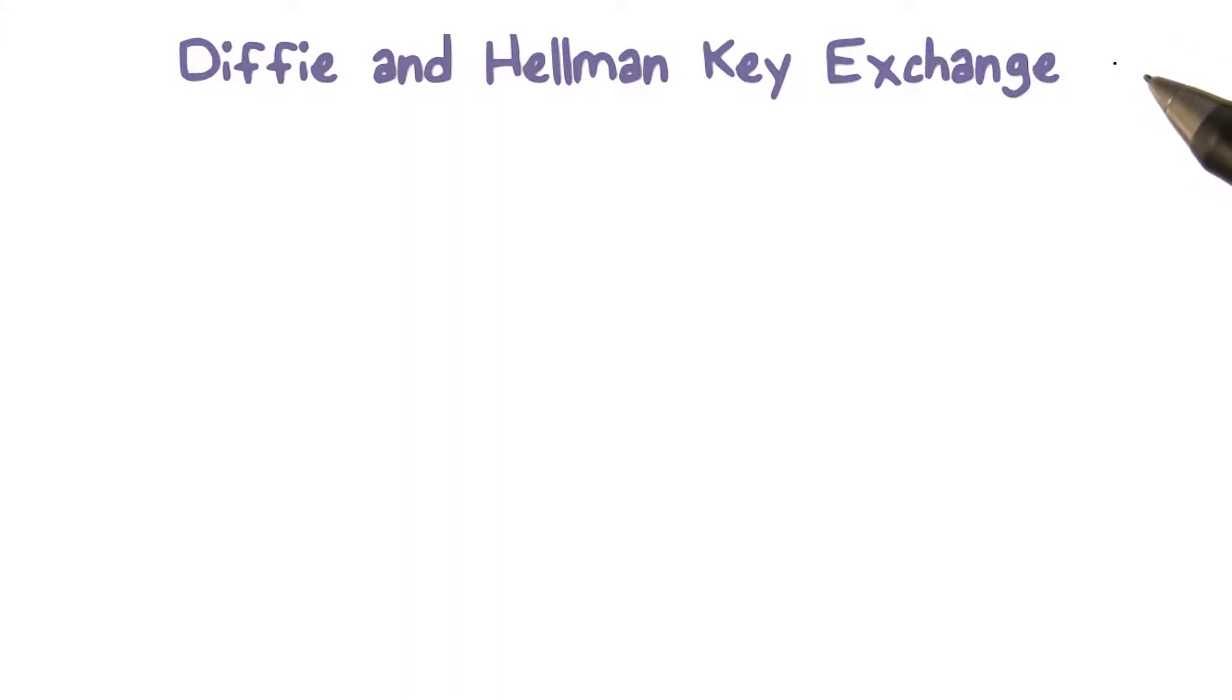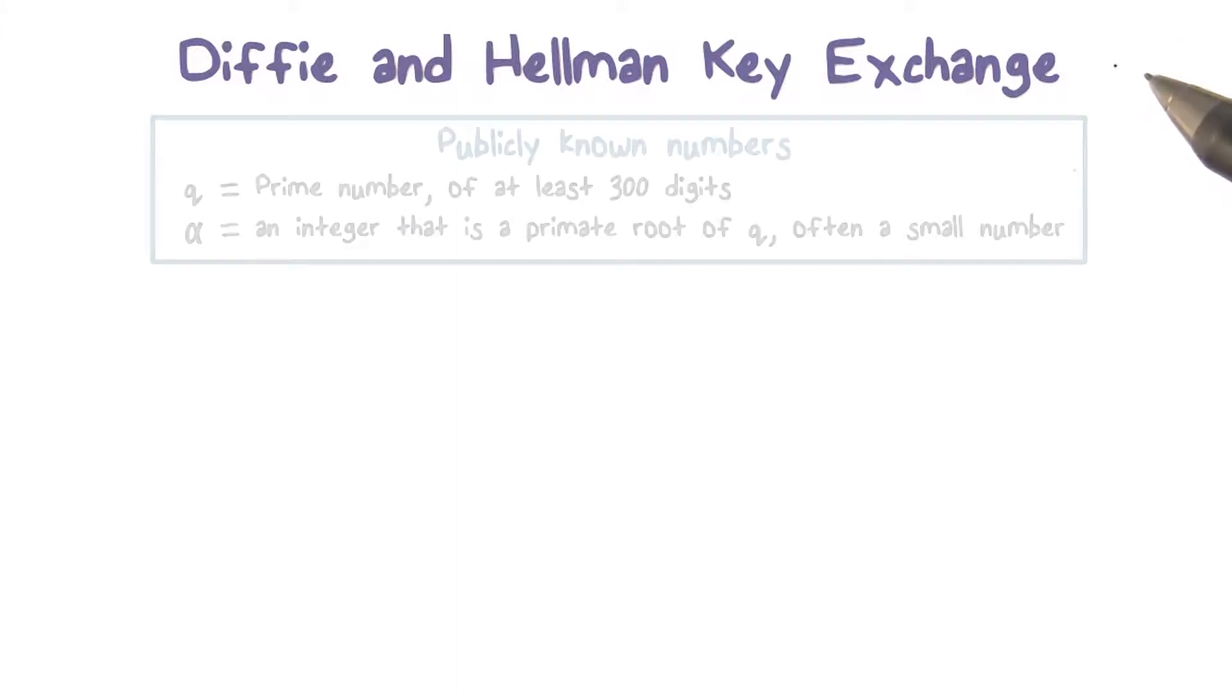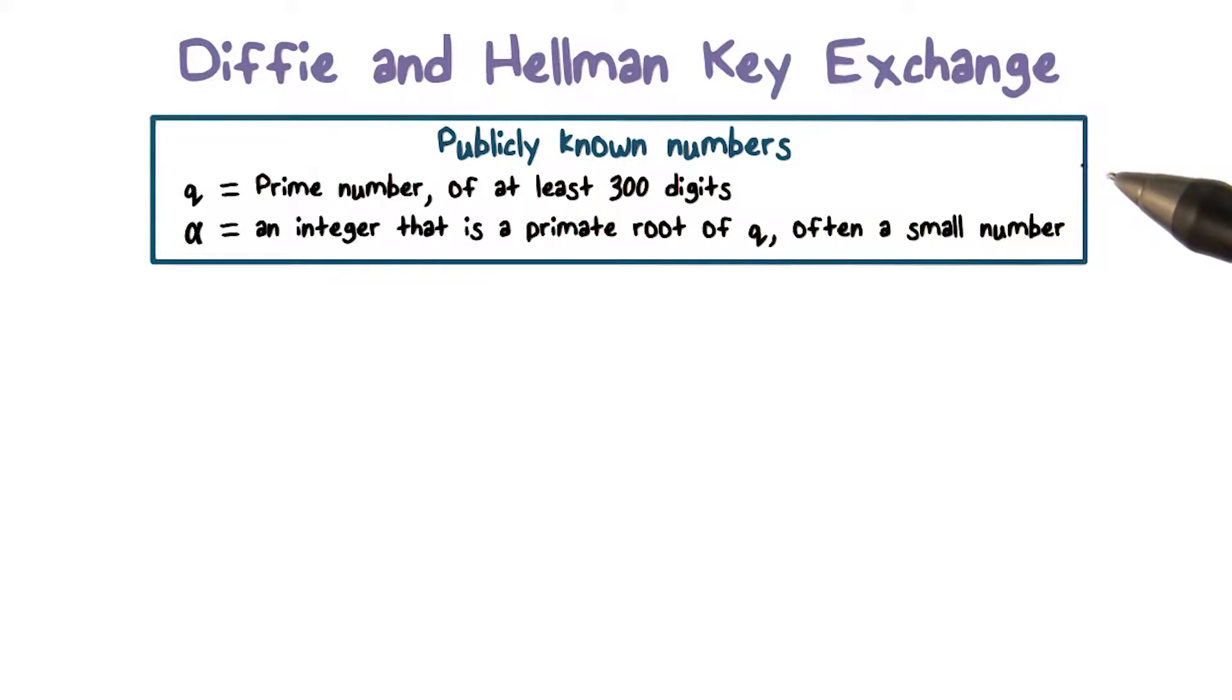Now let's look into the details of the Diffie-Hellman key exchange algorithm. There are two publicly known numbers: a prime number q and an integer alpha that is the primitive root of q.